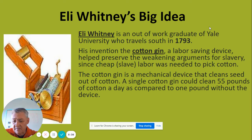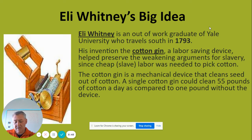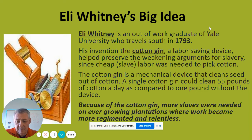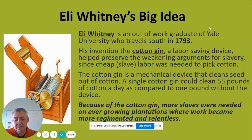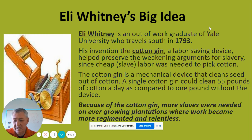Whitney showed his device off to several plantation owners. A decent carpenter could build one of these in a day once they saw how it worked. He never got it properly patented and didn't really make money from it. But the key idea — and this is why it's in bold — because of the cotton gin, more slaves were needed on ever-growing plantations where work became more regimented and more relentless. Cotton became the main crop, and you needed more acreage and more land to grow it.